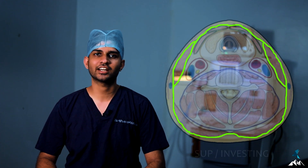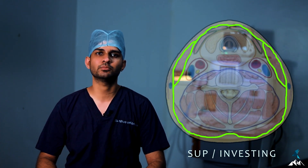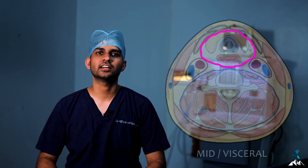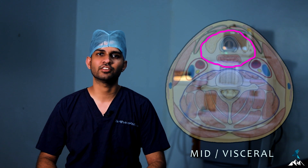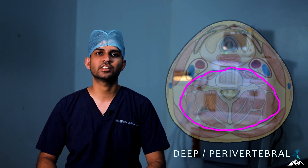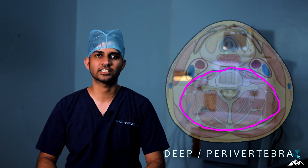The superficial part of the deep layer is called the investing fascia, which covers the sternocleidomastoid muscle. The middle part is called the visceral fascia — it covers the visceral structures including the trachea and thyroid gland. The deep part of the deep fascia is called the prevertebral fascia, or more appropriately the perivertebral fascia, since we call it prevertebral only anteriorly and perivertebral overall. So we have: the investing layer, the visceral layer, and the prevertebral or perivertebral layer.